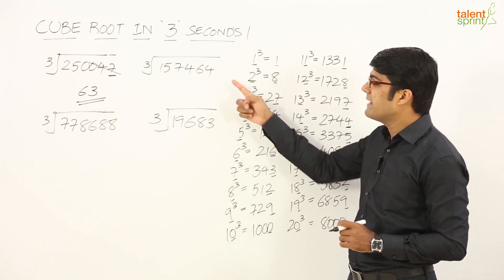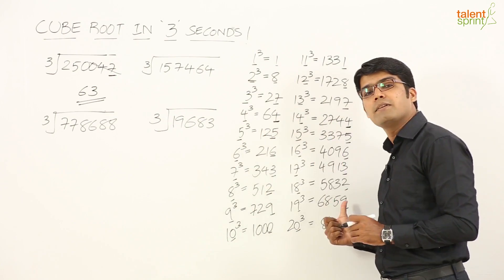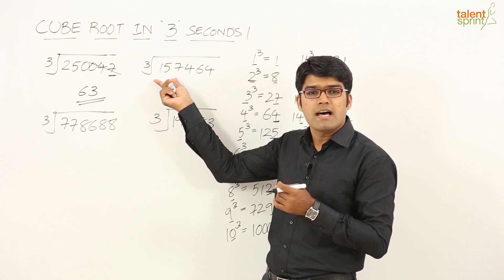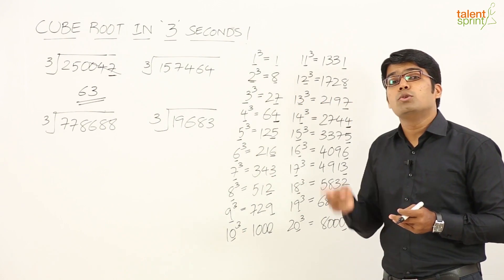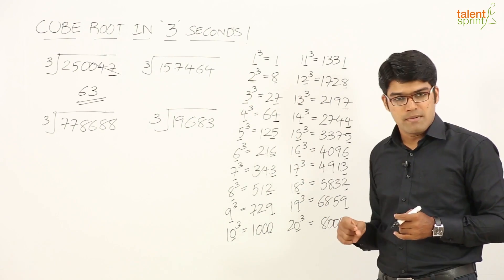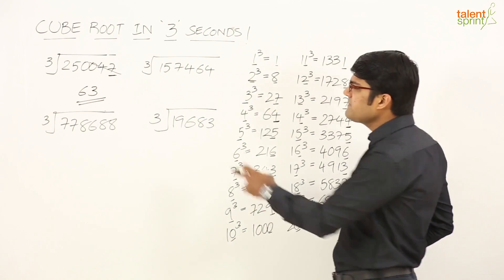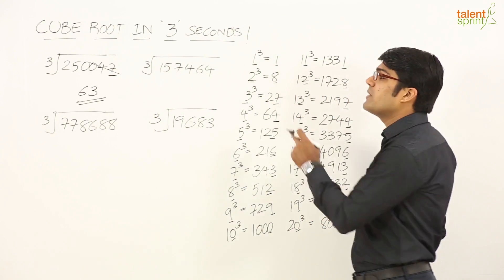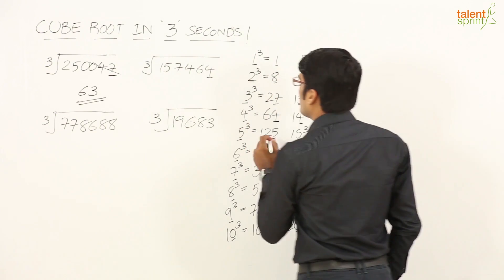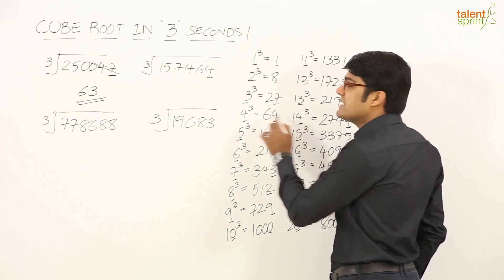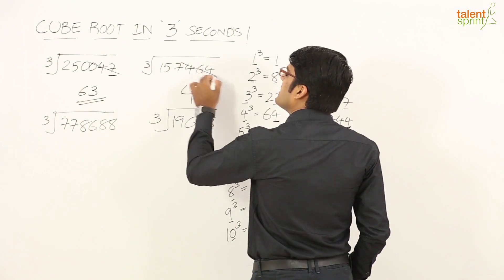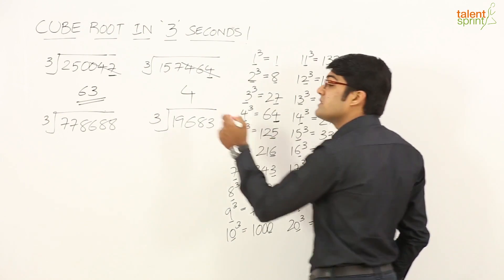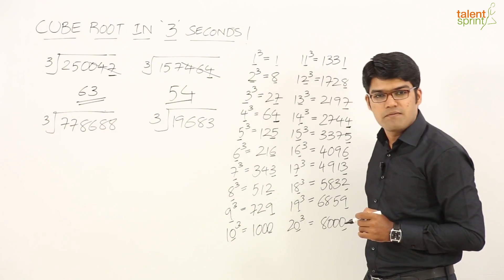Two very simple steps: first, obtain the units digit based on the pattern; second, remove the last 3 digits, find the highest perfect cube less than the remaining part, and its cube root gives the tens digit. Next example: 157464. The number ends in 4, so the cube root ends in 4. Leave the last 3 digits — we're left with 157. The highest cube less than 157 is 125, which is 5 cubed. So the answer is 54.